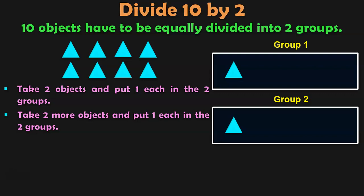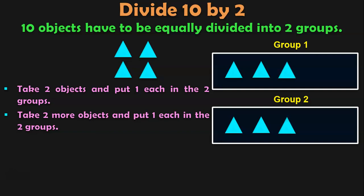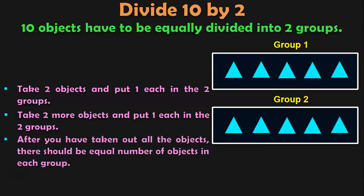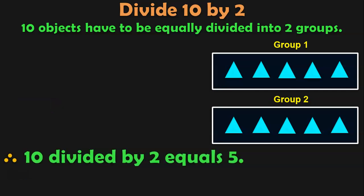Take 2 more objects and put 1 in each group. Take 2 more triangles, put 1 in each group. Keep repeating this. Take 2 more objects, put 1 in each group. Take 2 more objects and put 1 in each group. You are still left with 2 more objects, so take them and put 1 in each group. After you have taken all the objects, there should be equal number of objects in each group. We have 5 objects in each group. So 10 divided by 2 equals 5. This is also splitting of objects equally between groups.